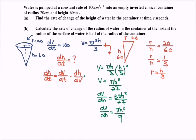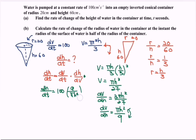Now substitute into the chain rule. dh/dt = 100 × (dh/dV). Remember, dh/dV is the reciprocal of dV/dh, so dh/dV = 9 / (πh²). Therefore dh/dt = 900 / (πh²).